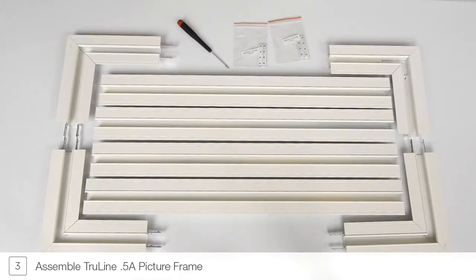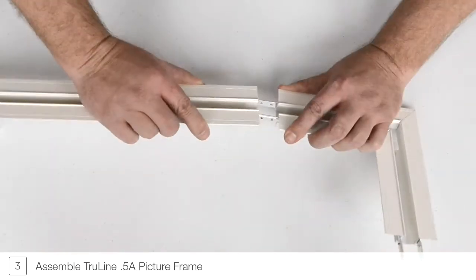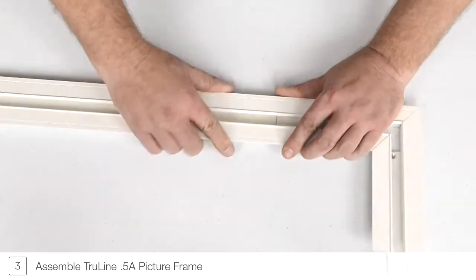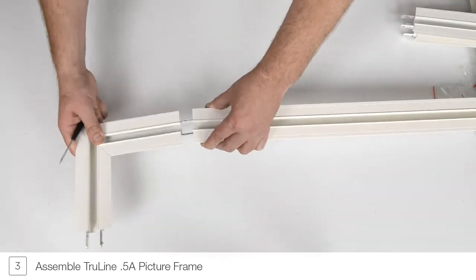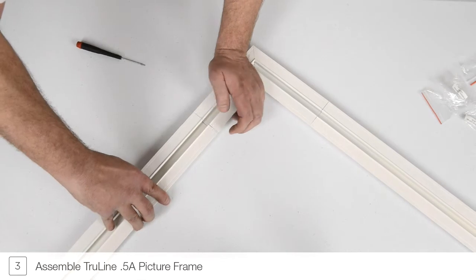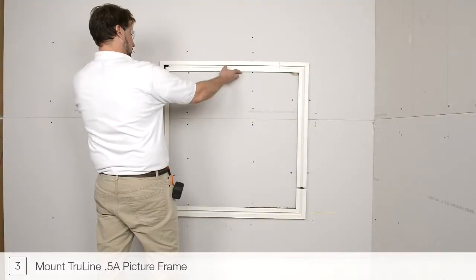Step 3. Using the included joiner bars, assemble the TrueLine .5A picture frame by attaching the straight channel sections to the L-shaped connectors. Insert the picture frame assembly.